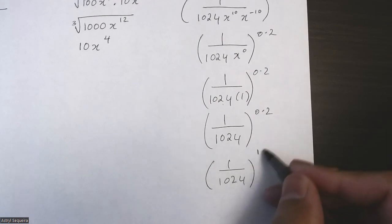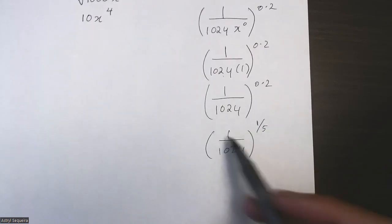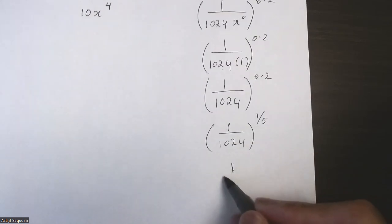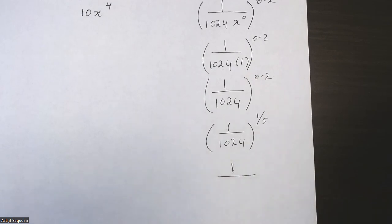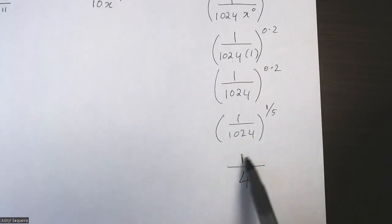Now the fifth root of 1 is just 1, and the fifth root of 1024—you can do that in the calculator; it probably should be 4, I'm guessing. Yep, it is. So the final answer is just 1 over 4.